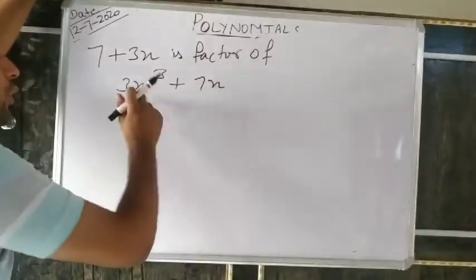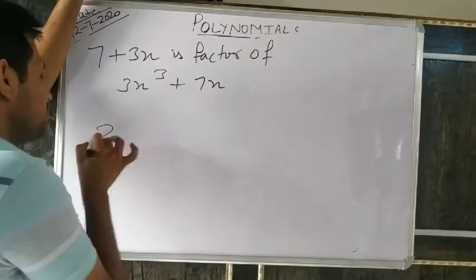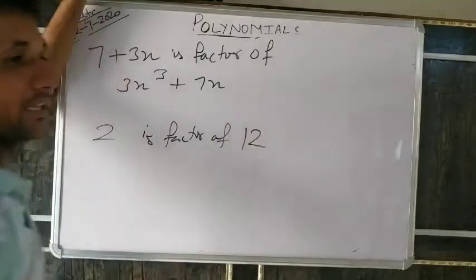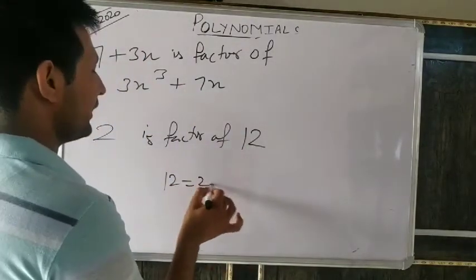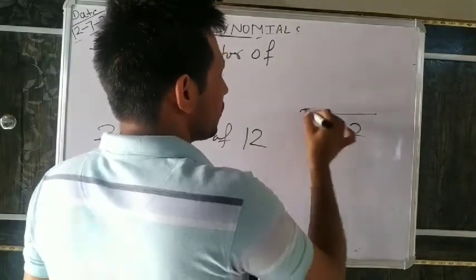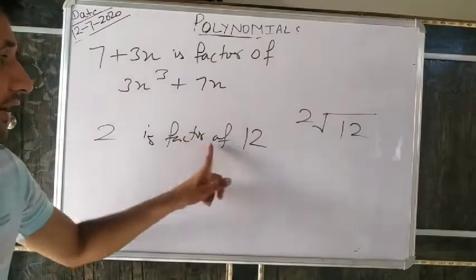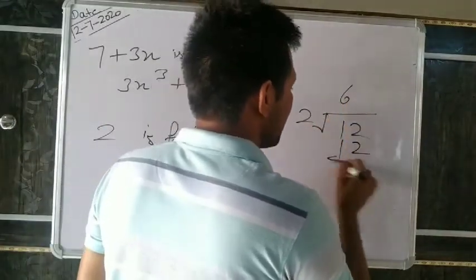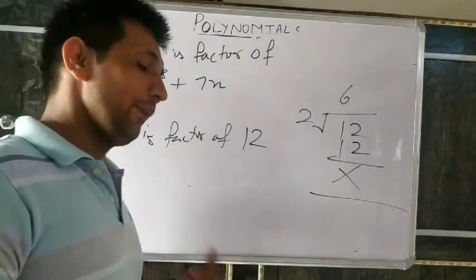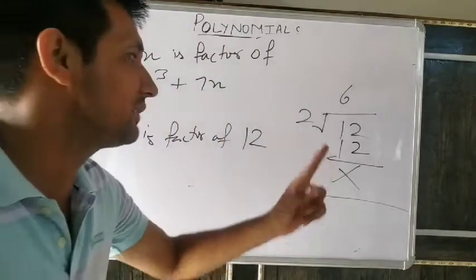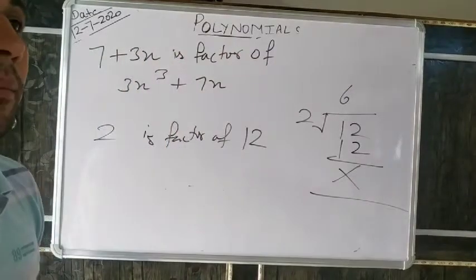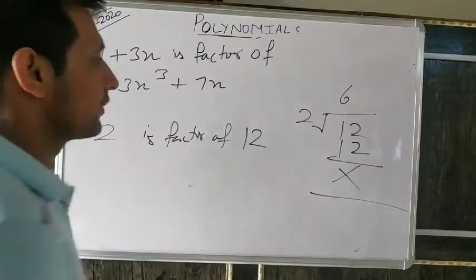Factor means: if 2 is a factor of 12, then 12 divided by 2 gives a remainder of zero. Always, if any number is a factor of another number, it means when we divide, the remainder becomes zero. Understand? Suppose I say: check whether 5 is a factor of 20. 20 divided by 5 gives remainder zero — yes, it is a factor, because 20 = 5 × 4.